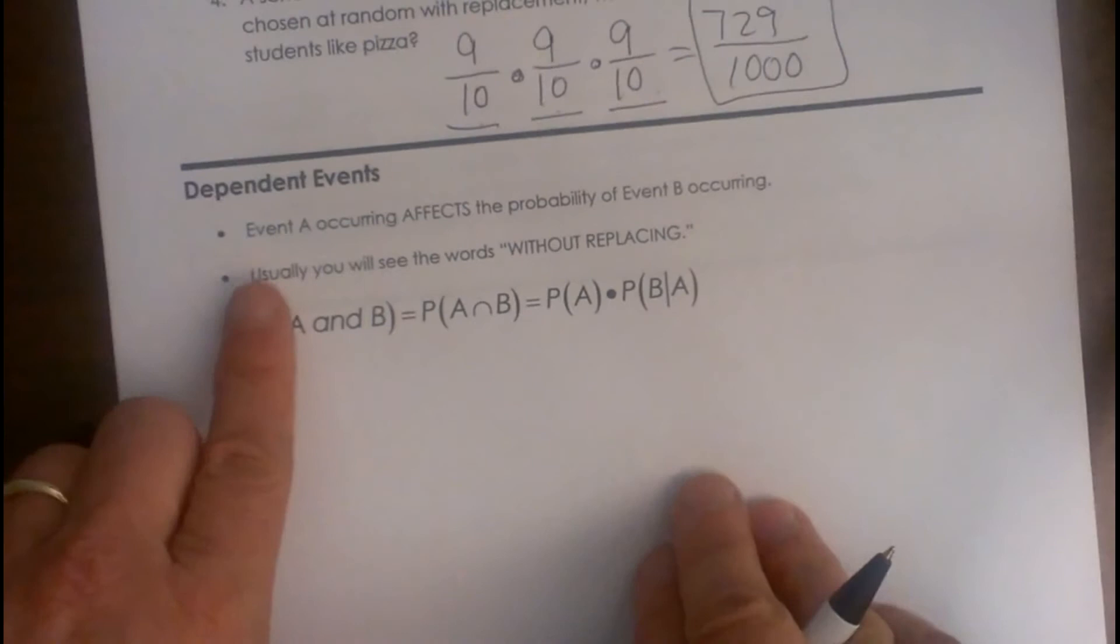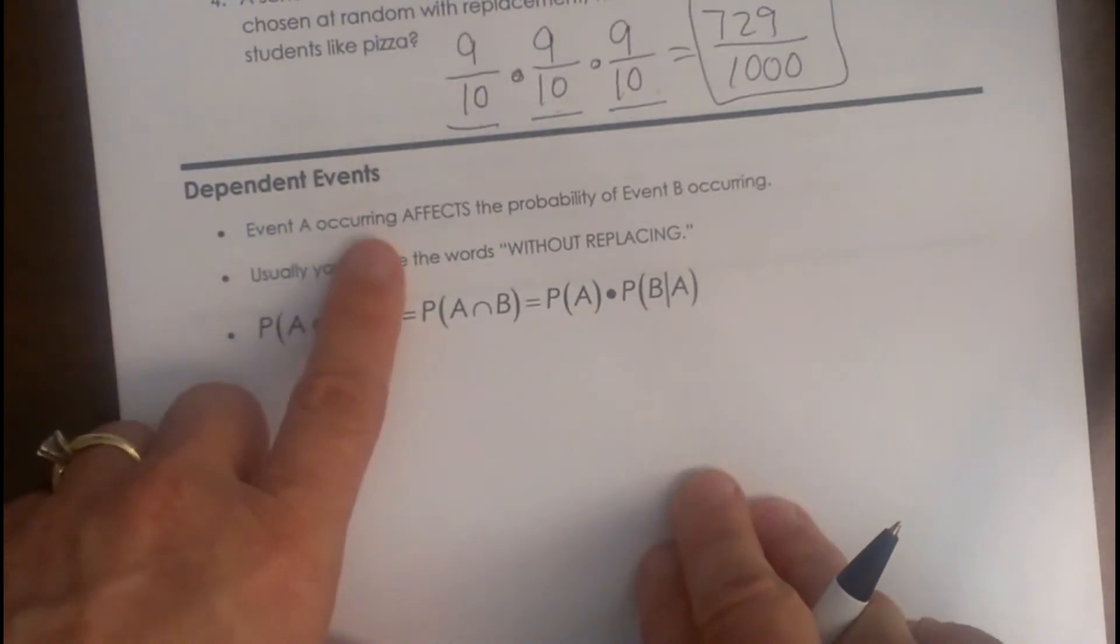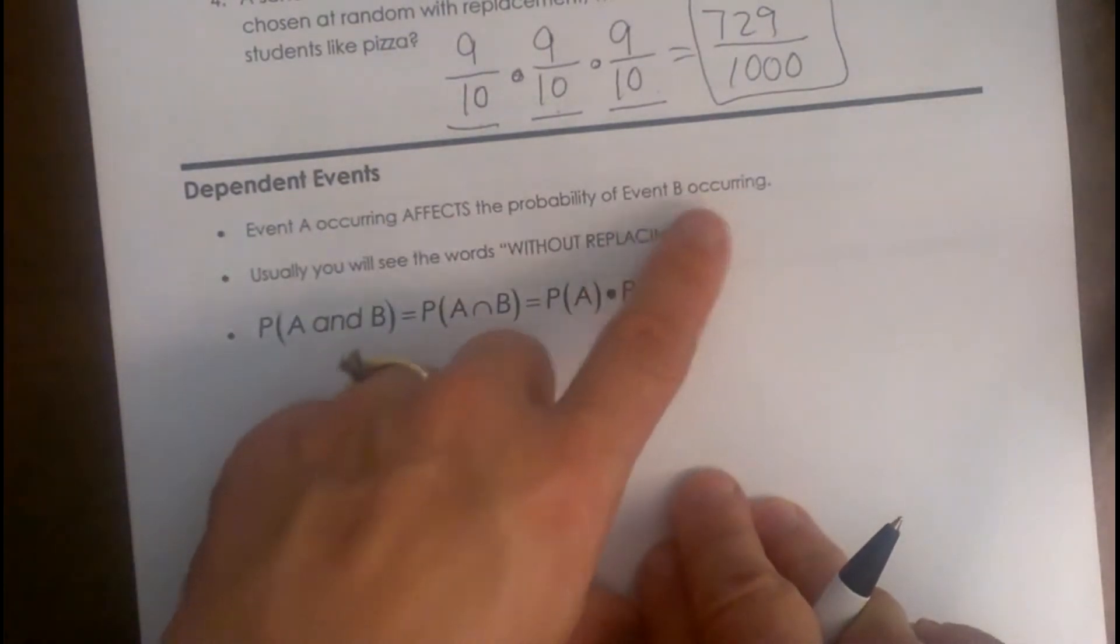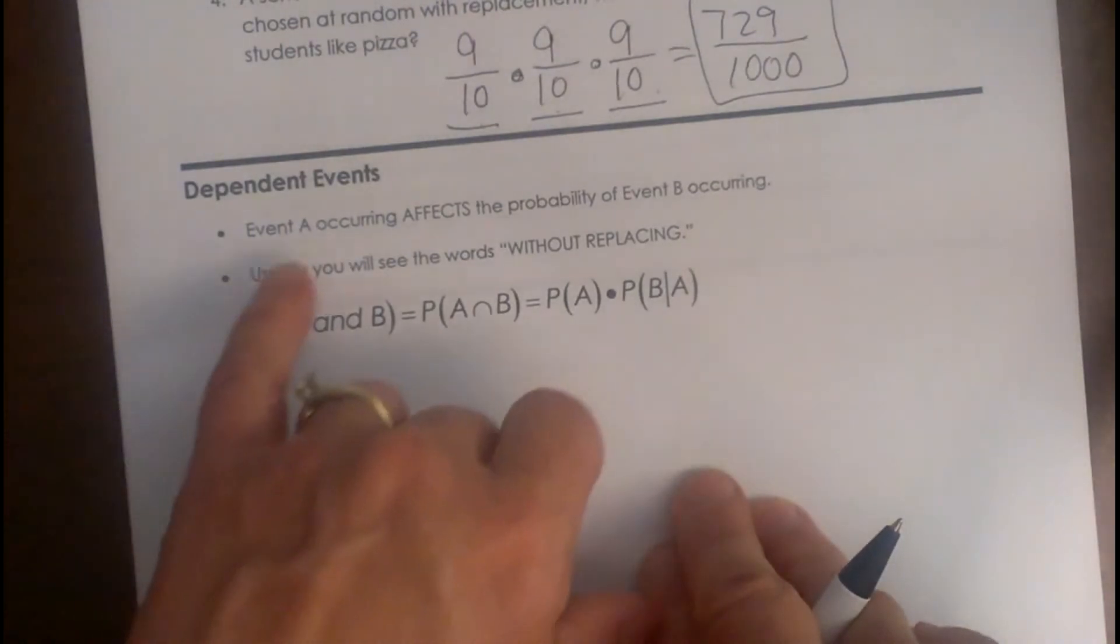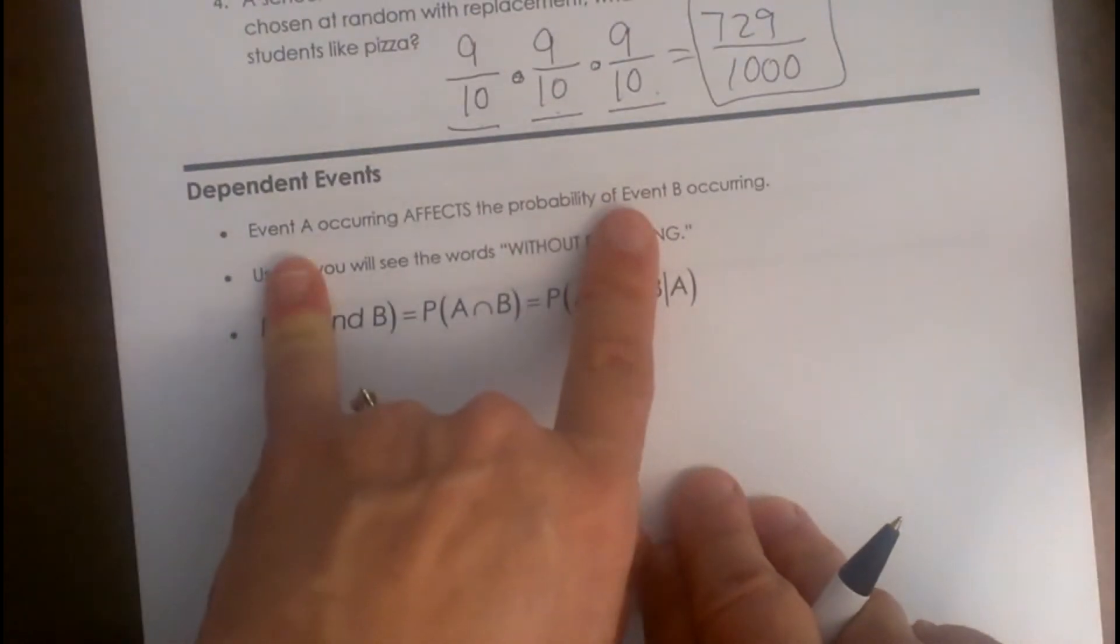This becomes a little trickier. Event A occurring affects the probability of event B. So we have two events going on and the first one affects the outcome of the second one.